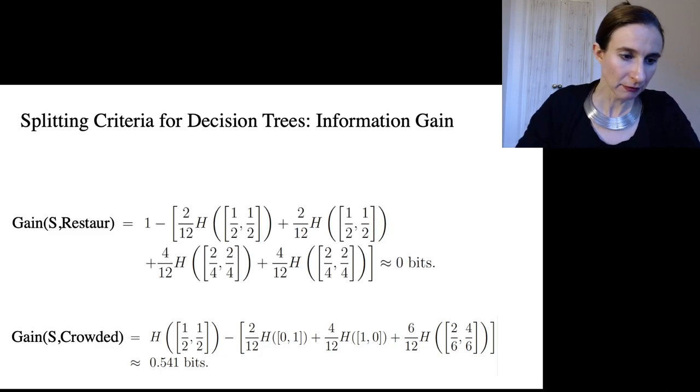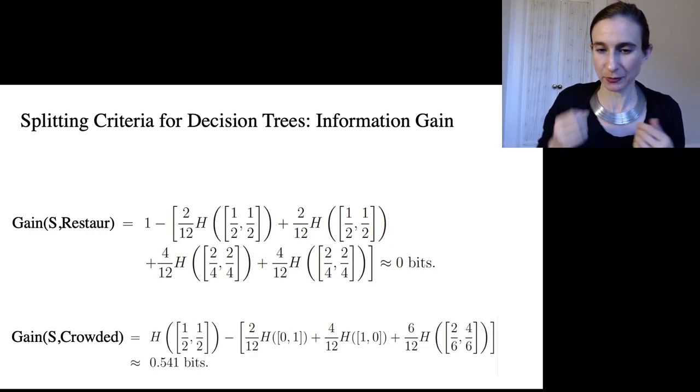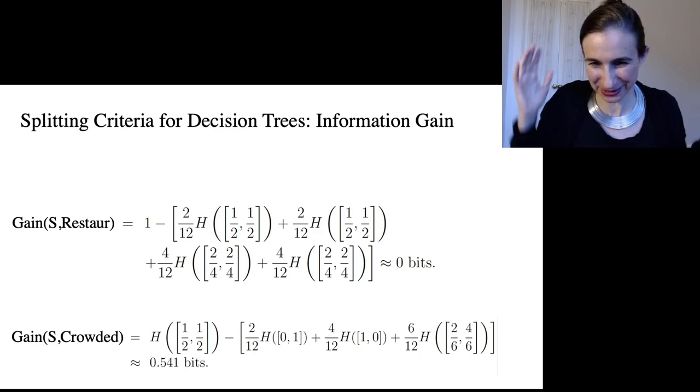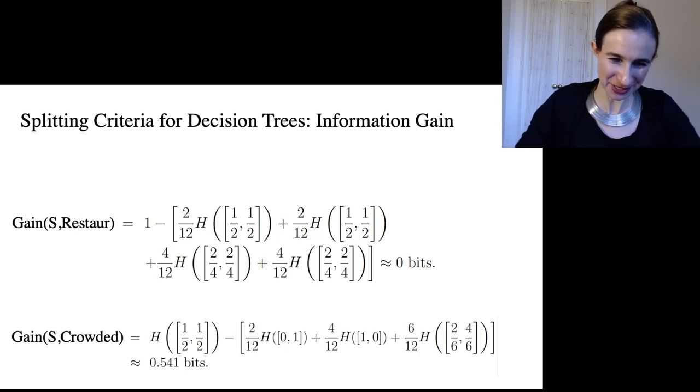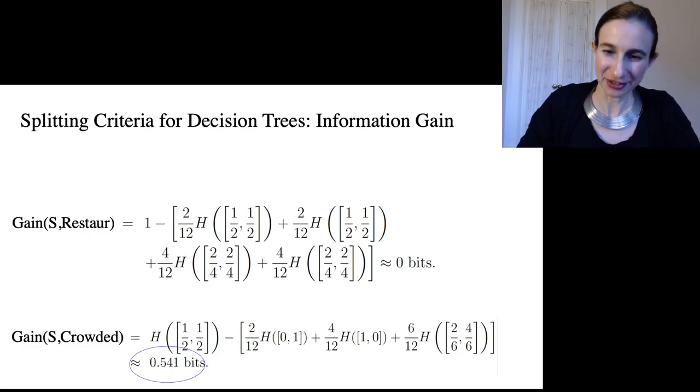So if we had computed the same criteria for the restaurant split, in fact the information gain would reveal that we gained actually no information when we split, because after we split we had the same number of positives and negatives in each branch. So we actually gained no information at all and so we would choose to split on the crowded feature rather than the restaurant feature.